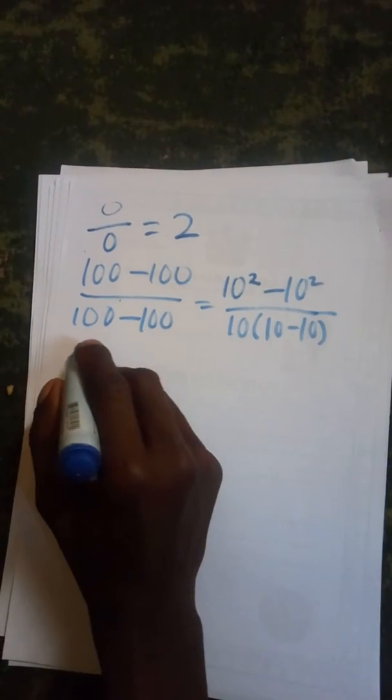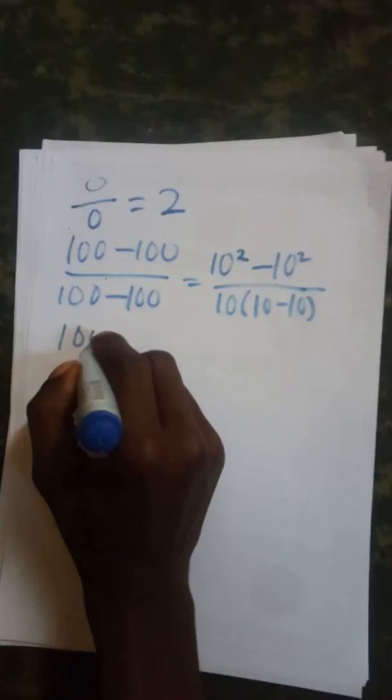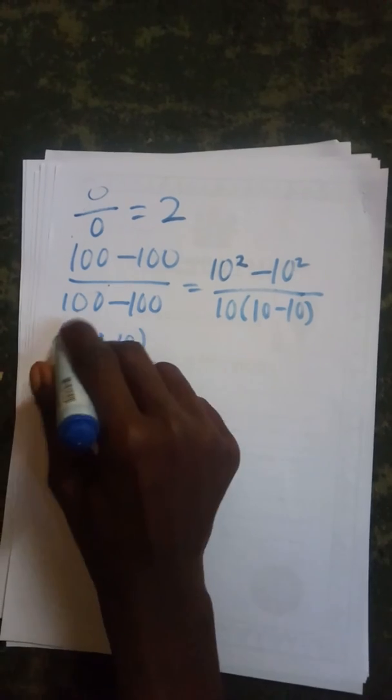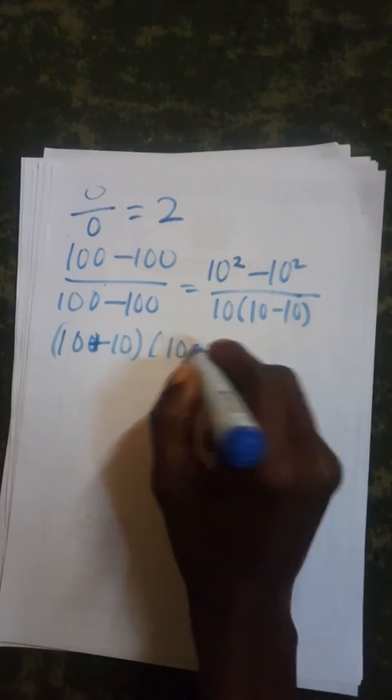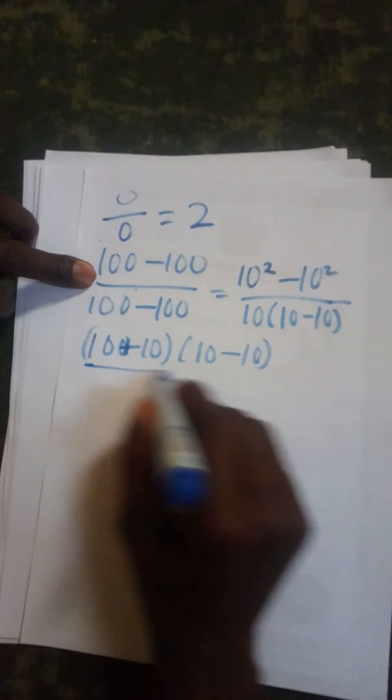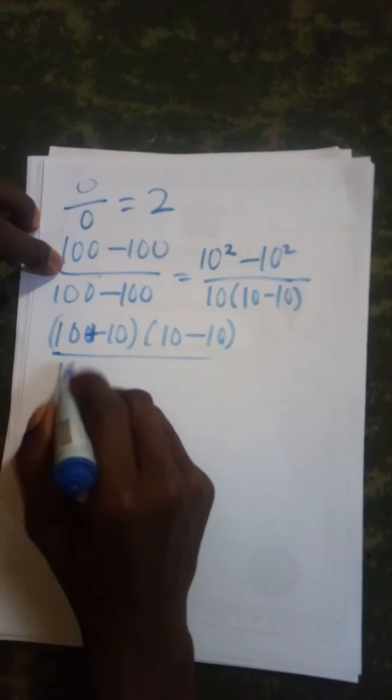difference of 2 squares. We factorize, which is 10 plus 10 into 10 minus 10, all over 10